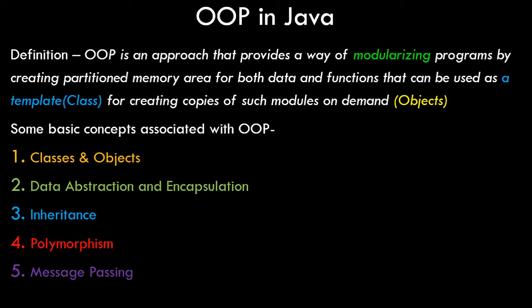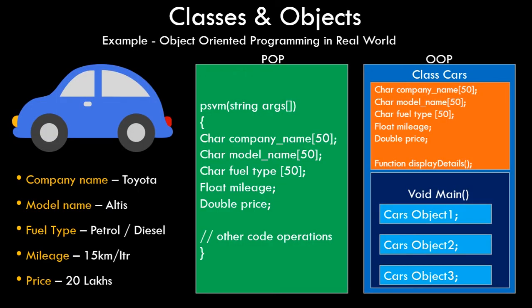Let's try to take a real world scenario and differentiate between procedural and object oriented programming. If you're coming from a C++ background and have seen my C++ object oriented introduction video, this is the same example discussed there. Let's assume you have a car manufacturing company and you want to store data of different cars and their models. I've mentioned five different data members you want to store.